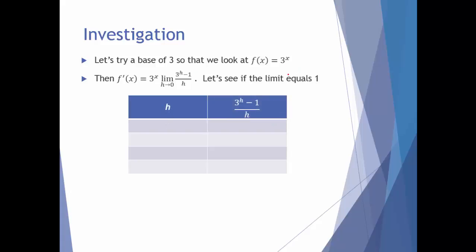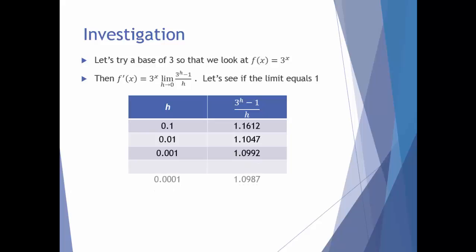Looking at that limit: for h = 0.1, the expression becomes 1.1612 — close to 1, we're in a good area. For h = 0.01, the expression becomes 1.1047. For h = 0.001, it's 1.09992. And for h = 0.0001, we get 1.0987.